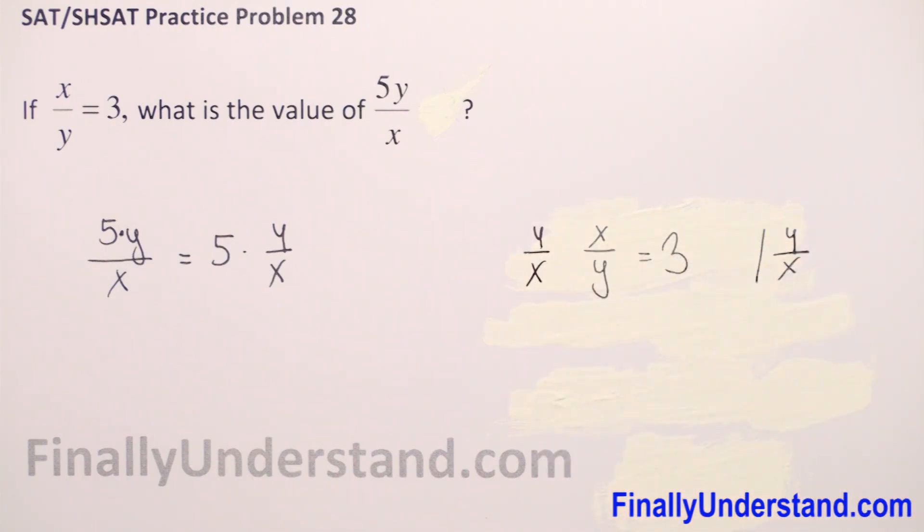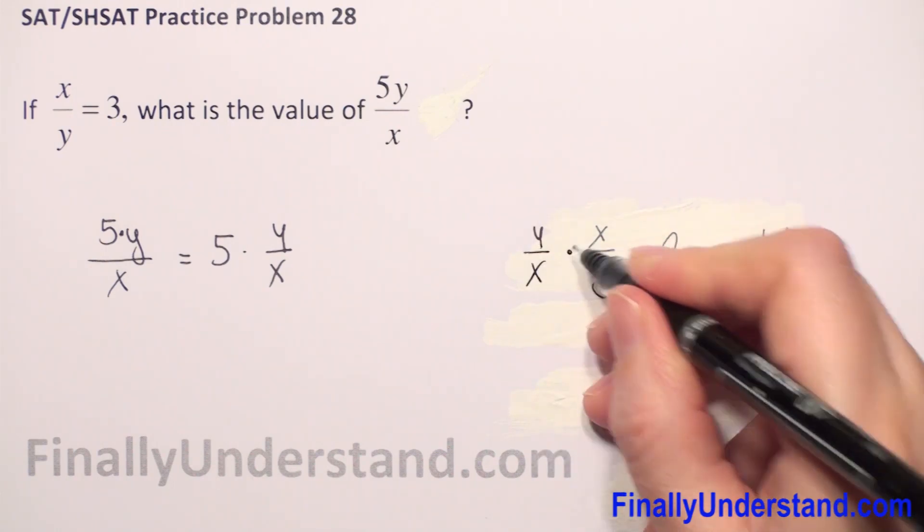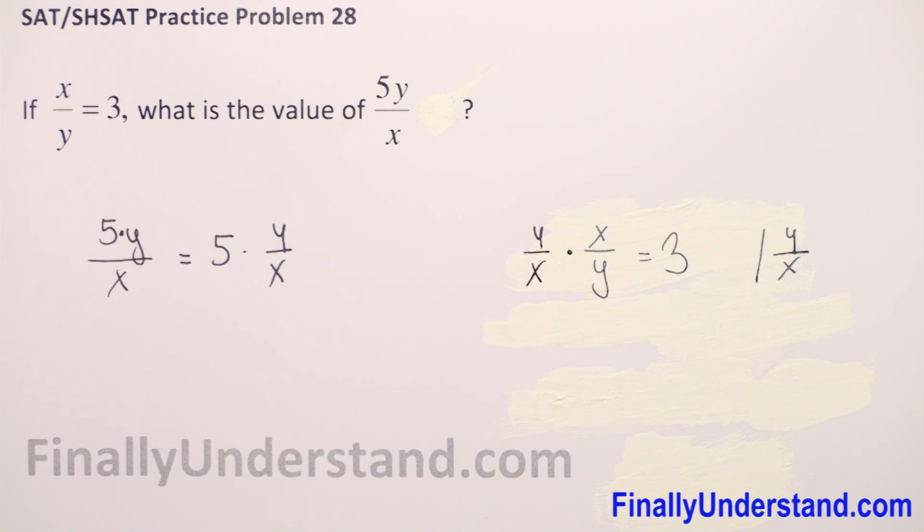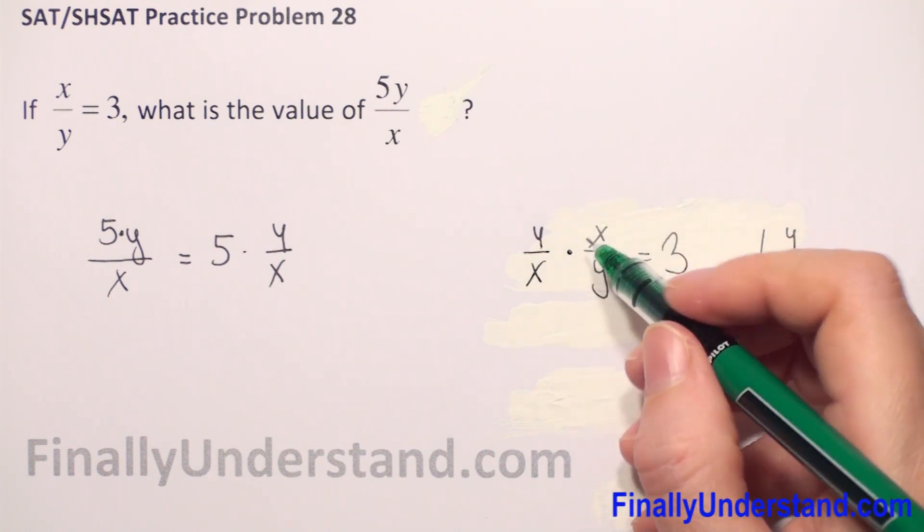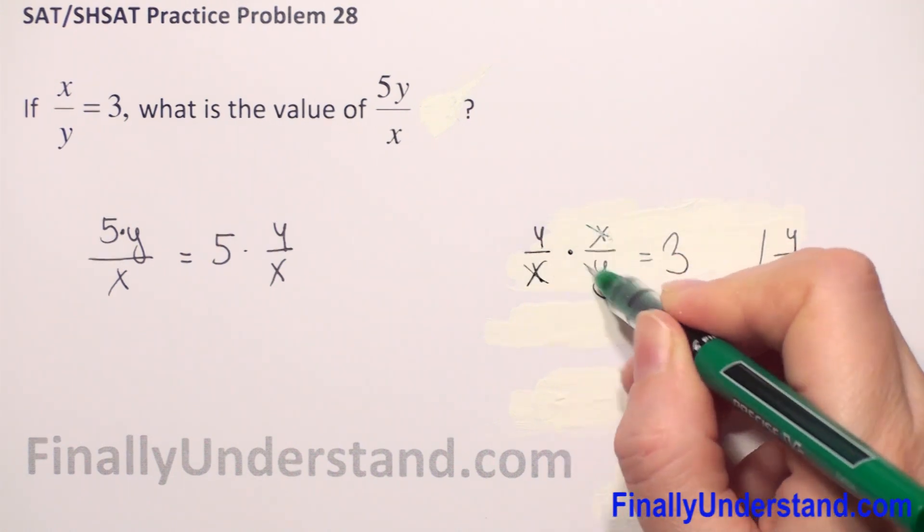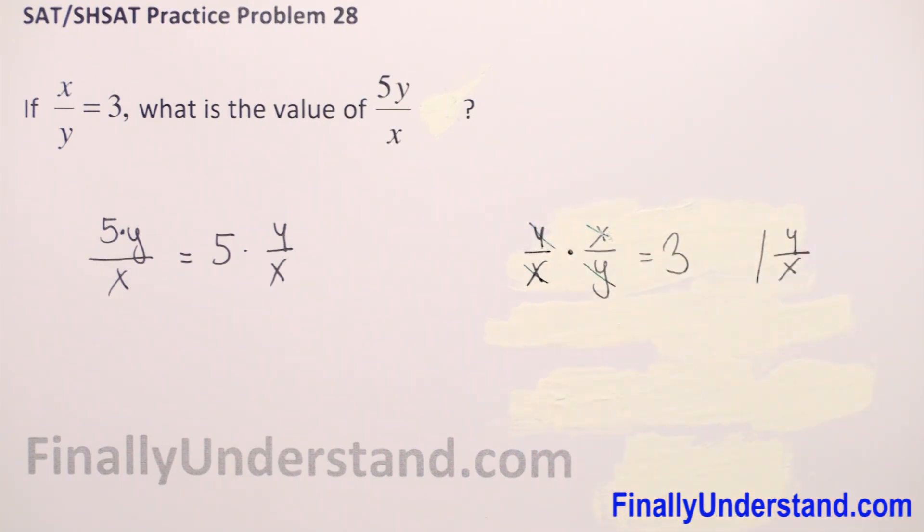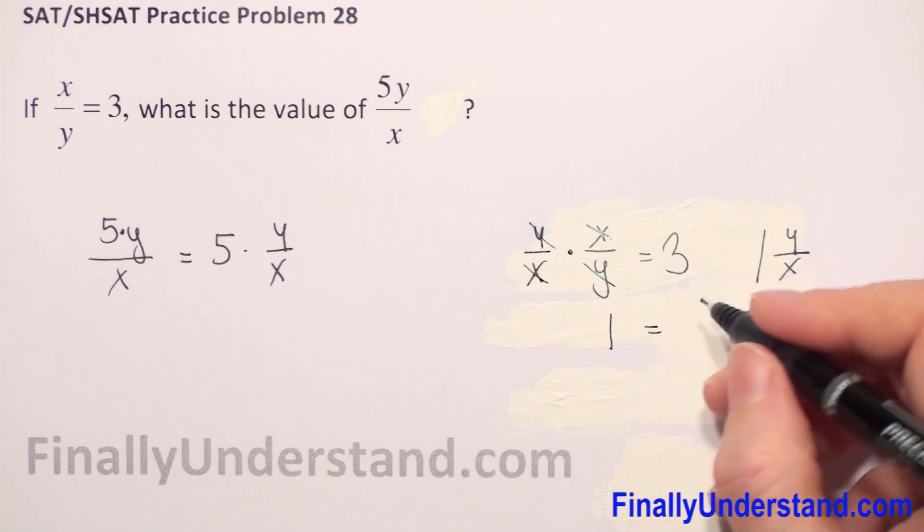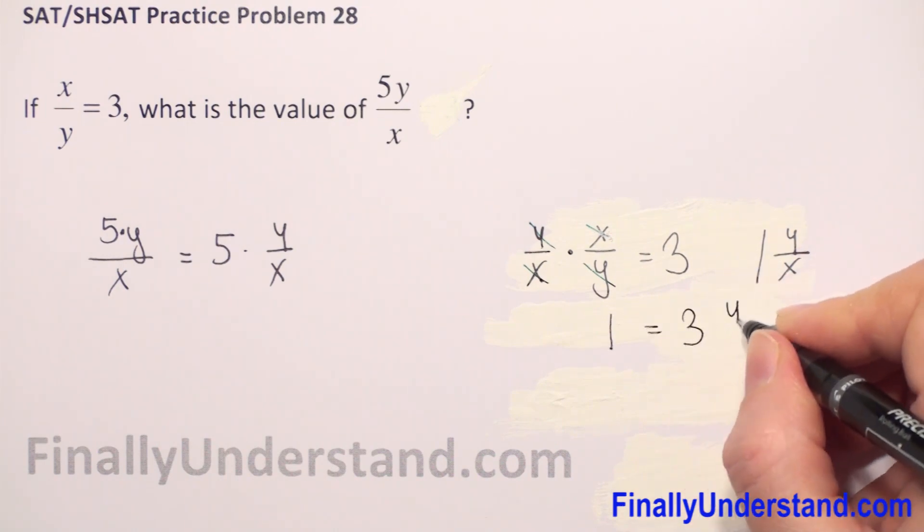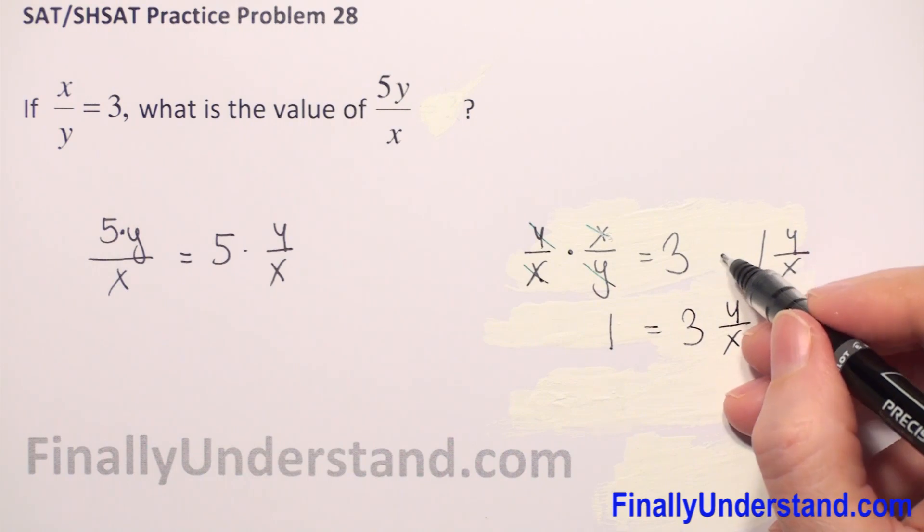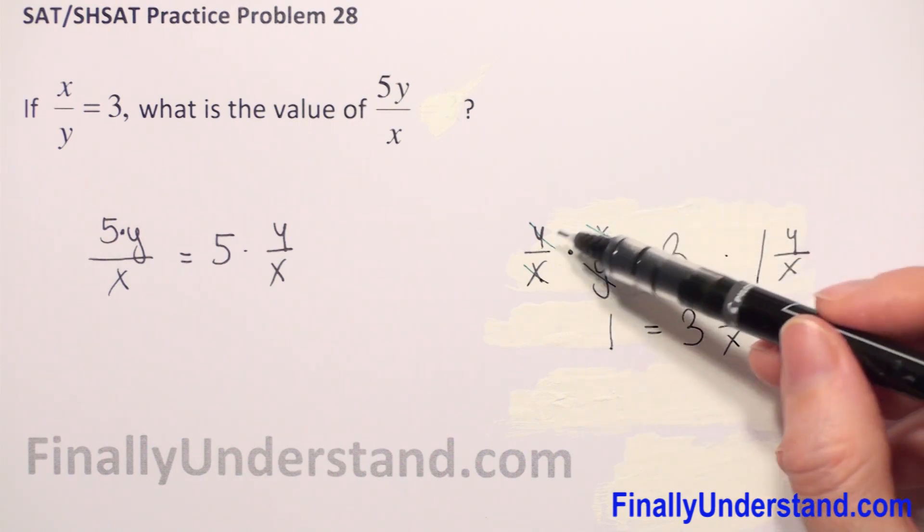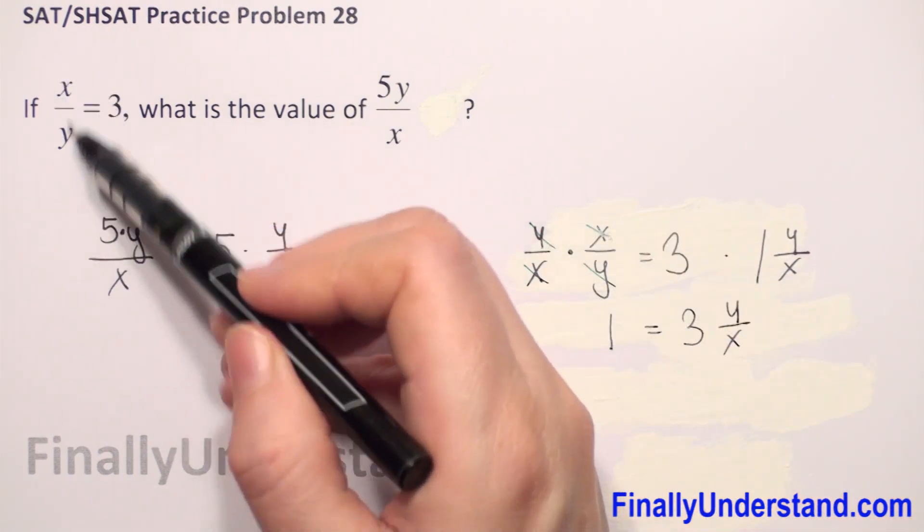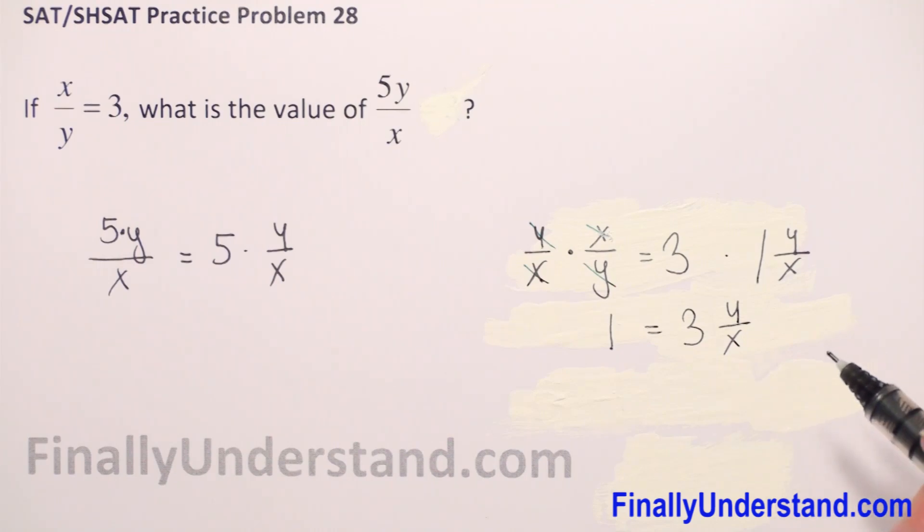So we see that we can reduce x with x, y with y. So we have on the left side only 1 is equal to 3 times y over x. We multiplied both sides by the reciprocal of x over y. So now we have y over x,